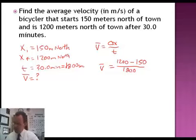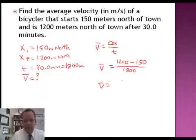So 1,200 minus 150. My average velocity is therefore 1,050 meters over 1,800 seconds, which comes out to an average velocity of 0.58 meters per second.